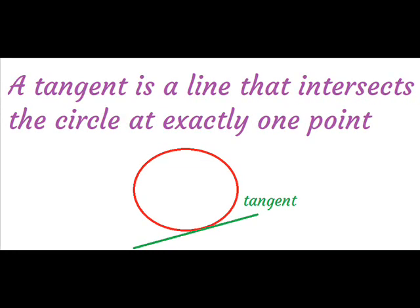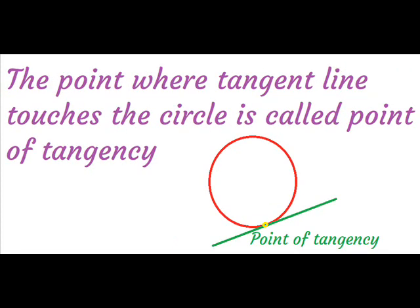A tangent is a line that intersects the circle at exactly one point. The point where the tangent line touches the circle is called the point of tangency.